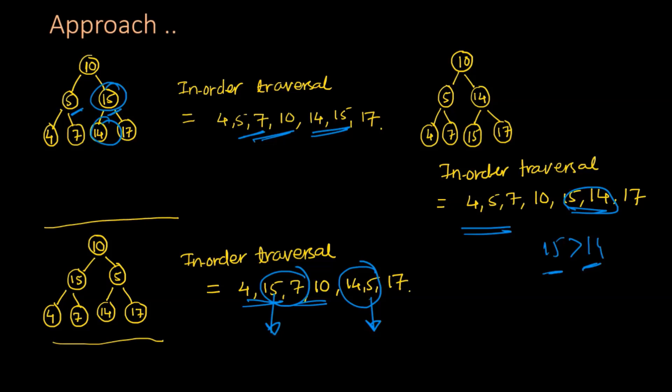To summarize our approach: we find pairs of consecutive elements in the in-order traversal array such that the first element is greater than the second element. If we find two pairs, we swap the first element from the first pair with the second element from the second pair. If we find just one pair, we swap the first and second element from that same pair.